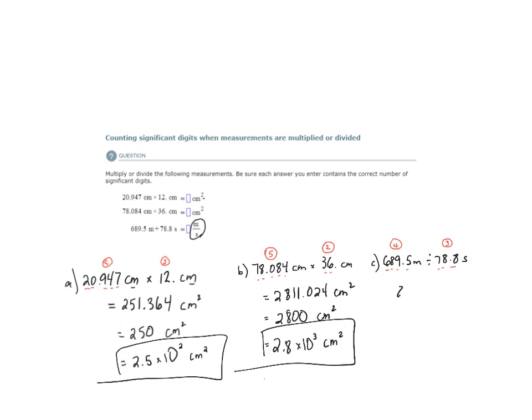When we do the math, we end up with 8.75 meters per second. And that happens to be three significant digits, so no adjustments are necessary.